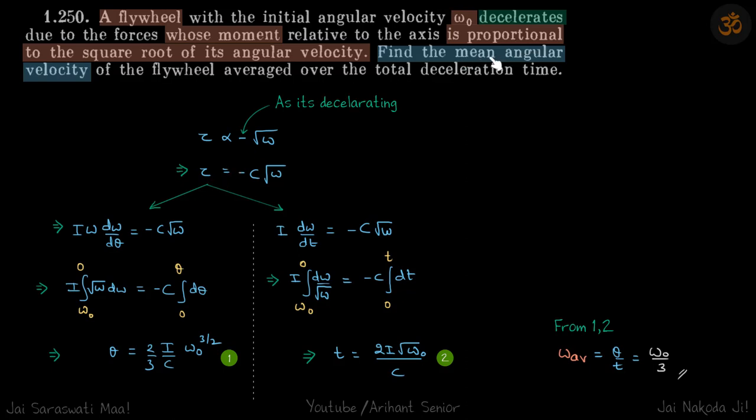As discussed, to find the mean angular velocity we need both theta and time. So we'll write alpha in both forms: one will be omega d(omega)/d(theta) and another will be d(omega)/dt. This will give a relation between omega and theta; this will give relation between omega and time.